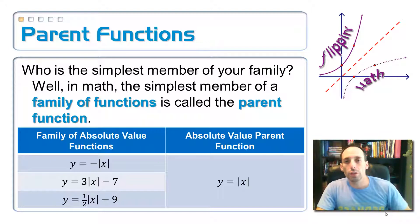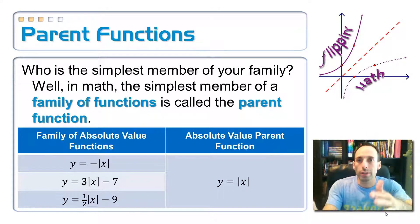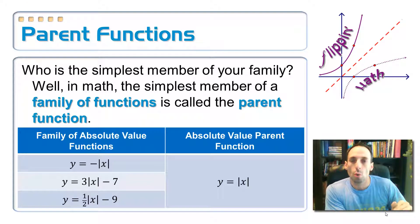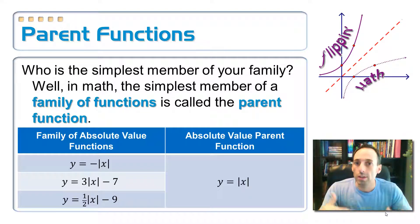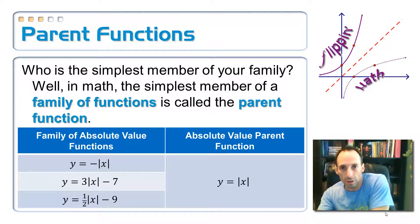This one, absolute value function, is what this lesson is about. So you can see I've got y equals negative absolute value of x, y equals 3 times absolute value of x minus 7, y equals one-half absolute value of x minus 9. And all of these boil down to the parent function, y equals absolute value of x. That's the parent function. And what we're going to be doing is transforming this graph in order to come up with all of the baby functions, the whole entire family over there.